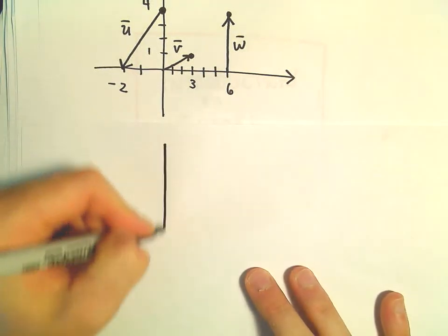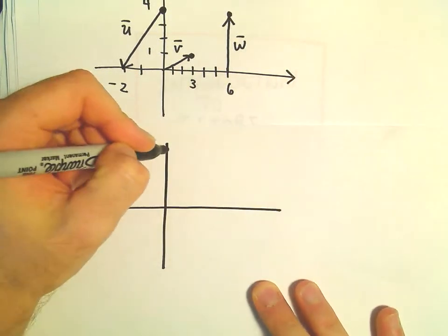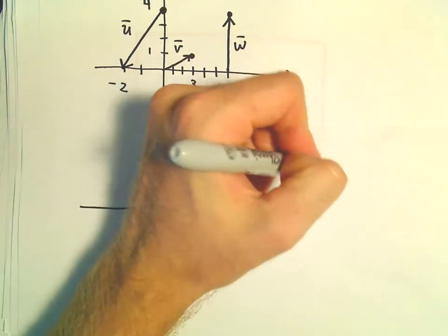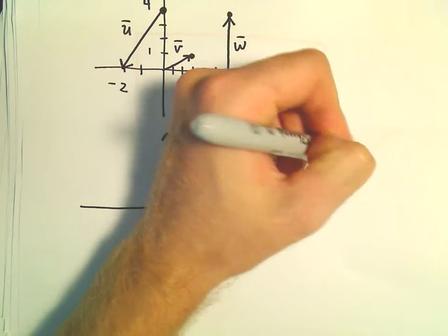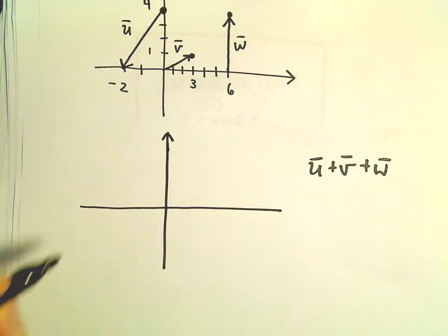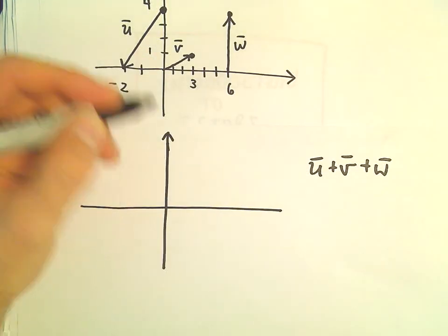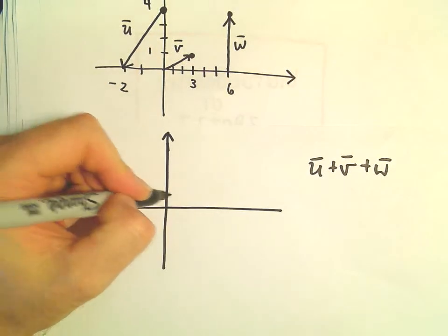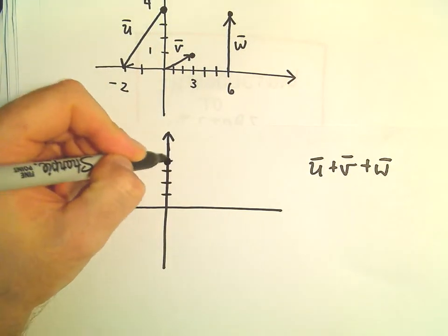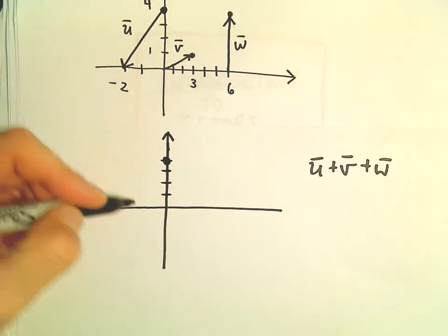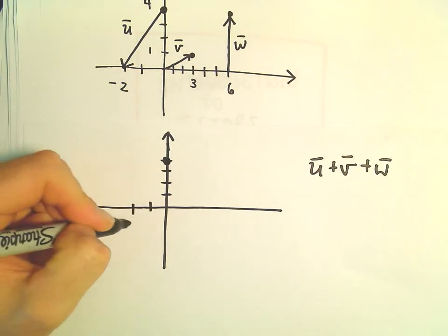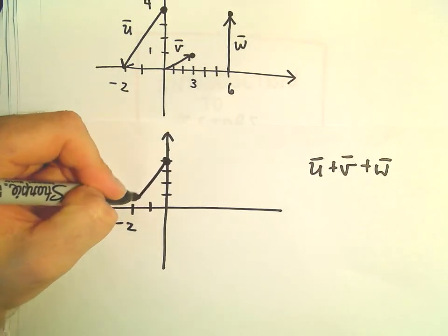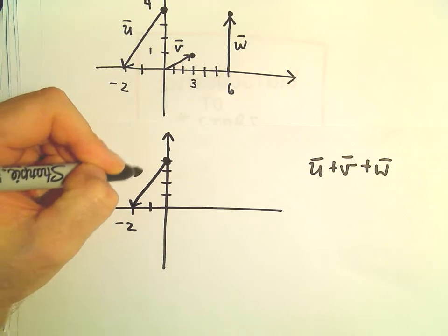Alright, so the first thing I'm going to do for vector u plus v plus w is think about vector u. So vector u starts at the point (0,4) and stops at (-2,0). So there's vector u.